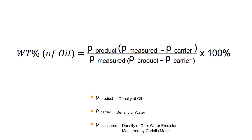For computing net oil flow rate, accurate measurement of density is of paramount importance, which is governed by this equation. Based on this equation, let's see an example of how entrained gas in an oil-water emulsion will report incorrect net oil flow.